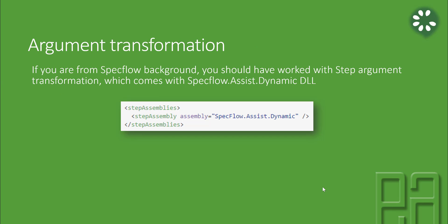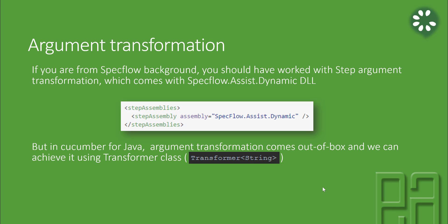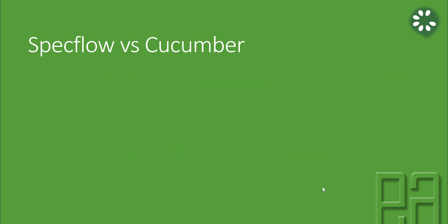If you are from a SpecFlow background, you should have worked with step argument transformation already, which comes with a DLL called specflow.assist.dynamic. We've already discussed this in our SpecFlow video series on the executeautomation channel. The same concept is available in Cucumber out-of-the-box, and we can achieve this using what is called a Transformer class. Using this Transformer class we can convert any type — for example, passing a String type, or even a custom type like a User class.